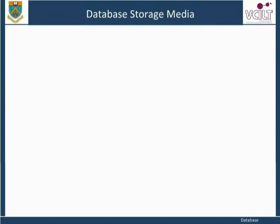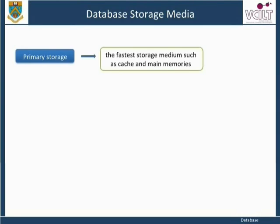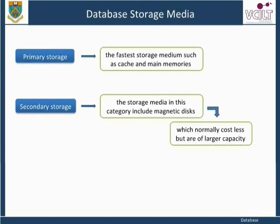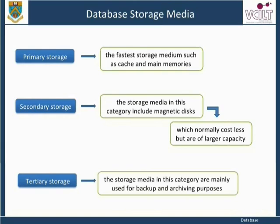Different types of data storage can typically be classified into three categories. Primary storage is the fastest storage medium, such as cache and main memories. Secondary storage includes magnetic disks, which normally cost less but are of larger capacity. Tertiary storage media are mainly used for backup and archiving purposes.